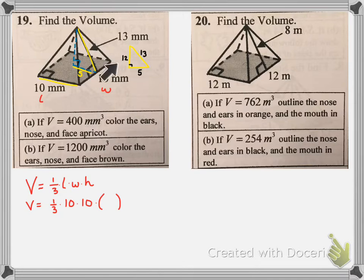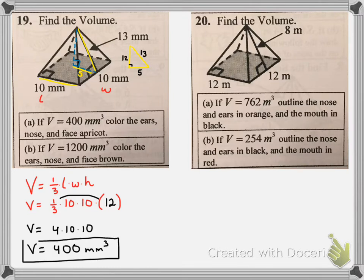So now we're going to take this 12 and plug it in for my height. And when you multiply that out, I like to multiply the one third by the 12. So that becomes four, four times 10 times 10. So your answer is 400 millimeters cubed. Don't forget those units. Those are important. And there we have our answer, which means that it is choice A. So you should have colored the ears, nose, and face apricot.